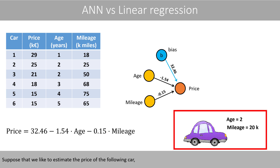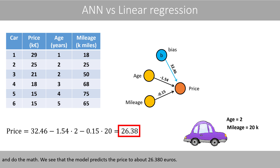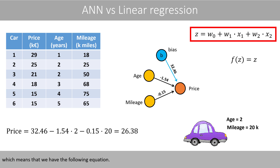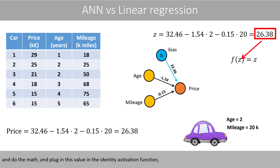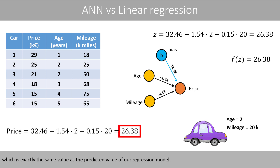Suppose that we like to estimate the price of the following car. We plug in the age and the mileage in the equation and do the math. We see that the model predicts the price to about 26,380 euros. We can calculate the same thing with the neural network. Since we have two input nodes, n is equal to 2. If we plug in the weights and the values of the two input nodes and apply the identity activation function, we see that the value of the output node is equal to 26.38, which is exactly the same value as the predicted value of our regression model.